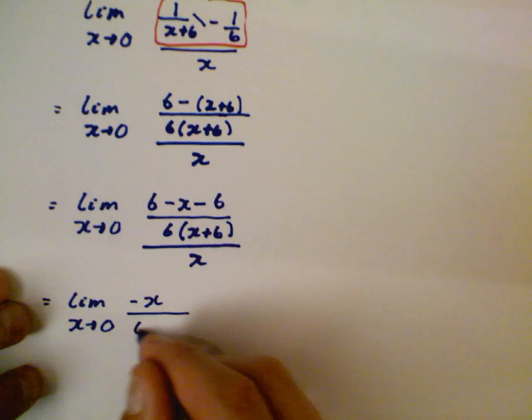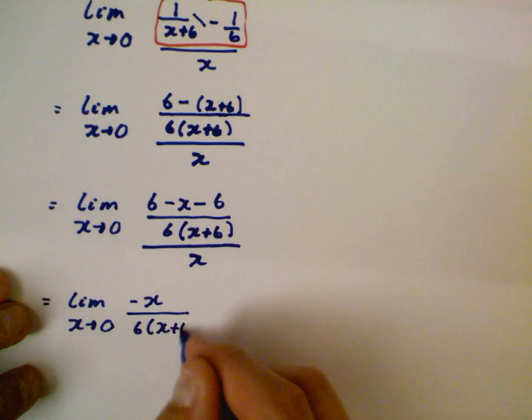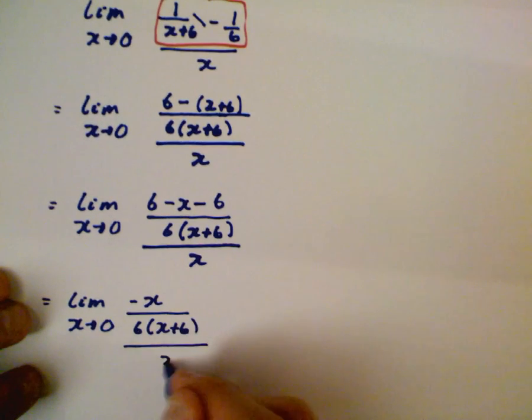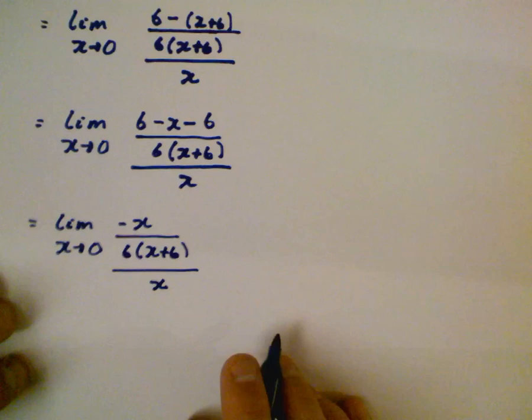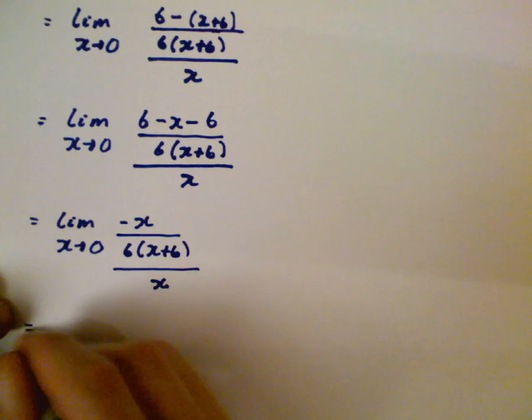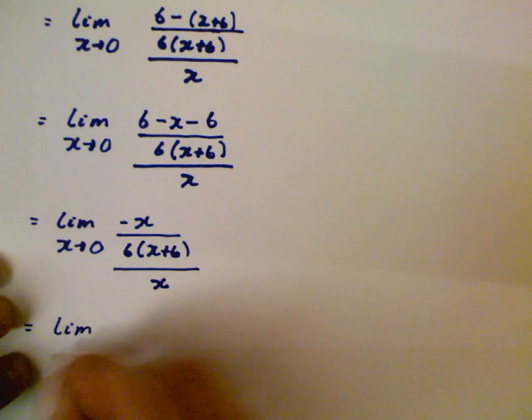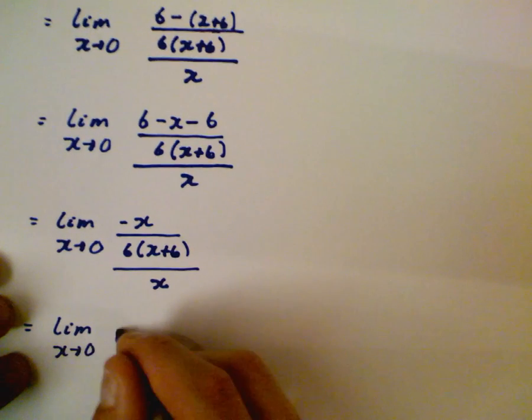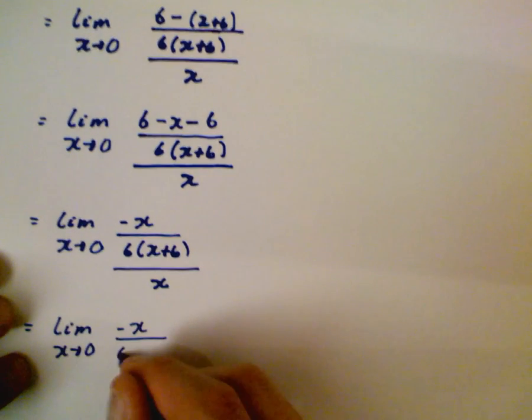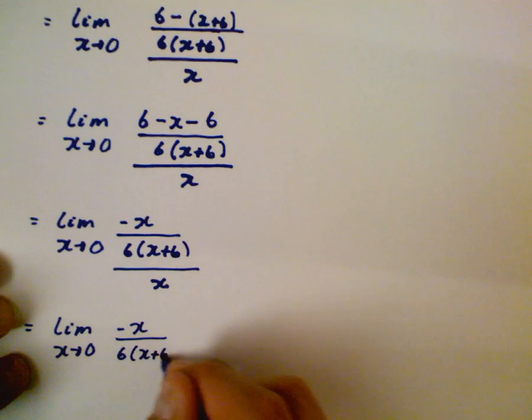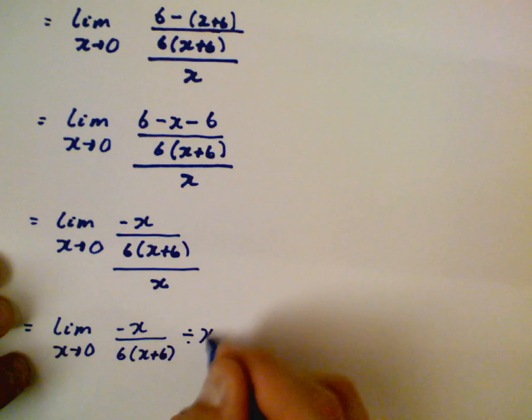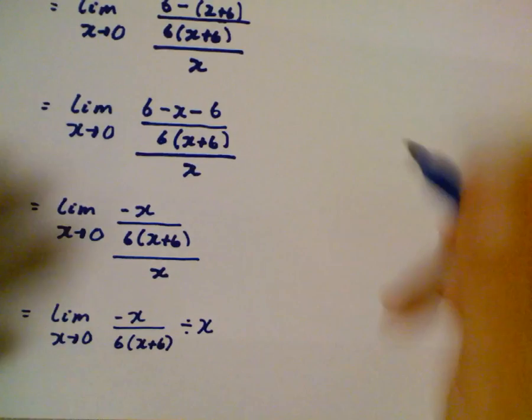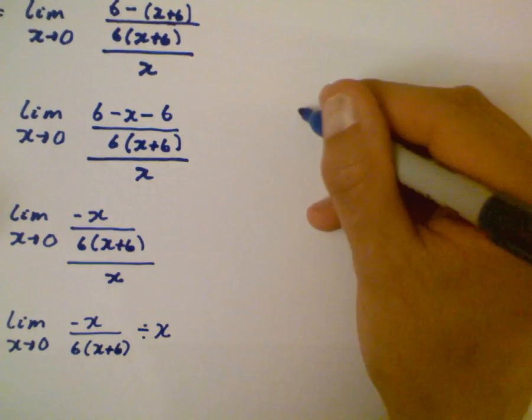Okay and now what we're going to do is rewrite this. We know that negative x divided by 6 times x plus 6 divided by x, we're going to rewrite this. It's going to be really the same thing but we're going to use multiplication. We're going to say the limit as x is approaching zero of negative x, so everything stays the same on the left there.